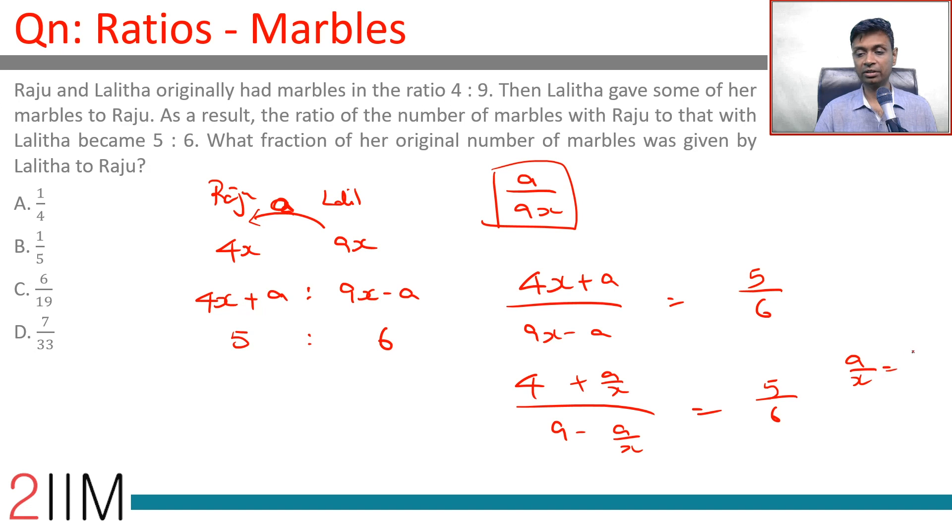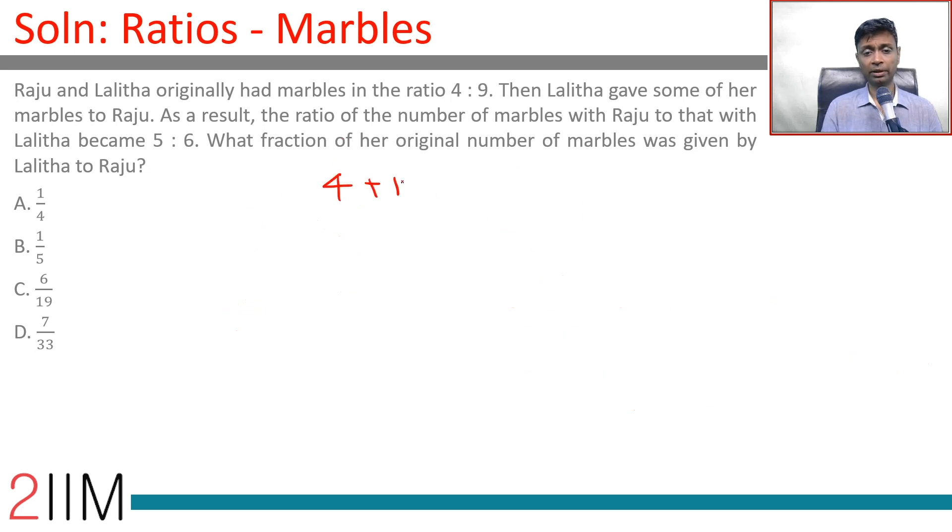Let's say A by x is k. We want to find k by 9, so let's simplify this: (4 + k) by (9 - k) is 5 by 6. We want to find k by 9. K is A/x, we want to find A by 9x.